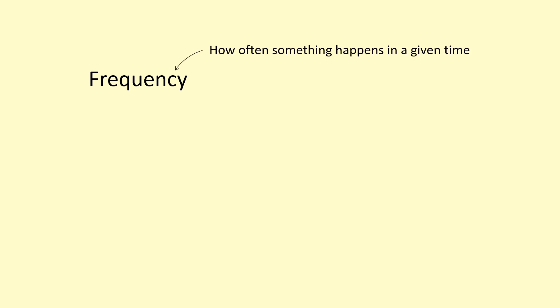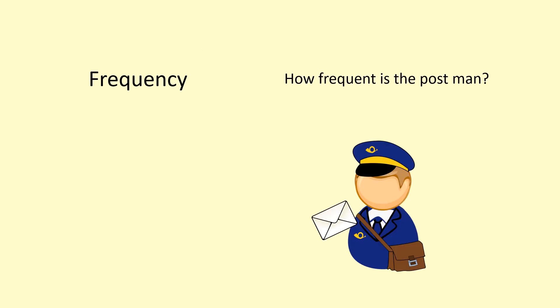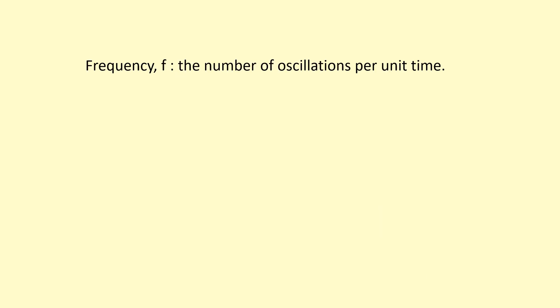Frequency is in many ways the inverse of time period. It's how often something happens in a given time. For example, if the postman comes three times per week, that's a frequency. The word frequency doesn't have to be used for waves — it can be used for anything that's oscillating. It means the number of oscillations per unit time.